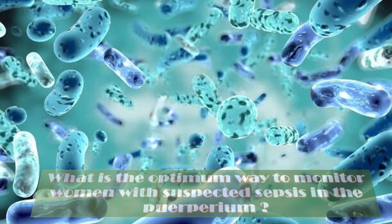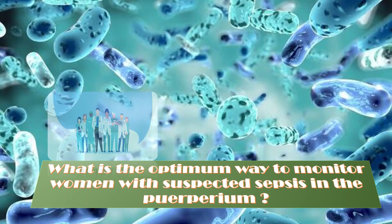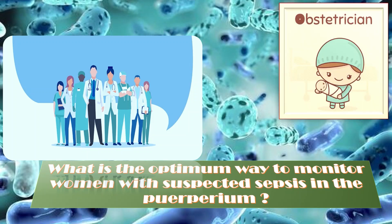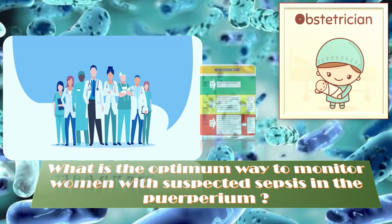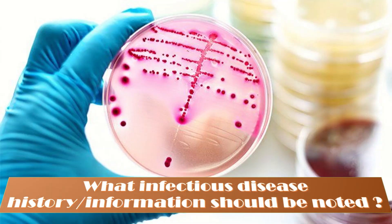Monitoring of the woman with suspected severe sepsis or established sepsis should be multidisciplinary but preferably under the leadership of a single consultant. A senior obstetrician should be involved in consultation with an intensivist, microbiologist, or infectious disease physician. Regular observation of all vitals — including temperature, pulse, blood pressure, and respiratory rate — should be recorded on a Modified Early Obstetric Warning Score (MEOWS) chart.